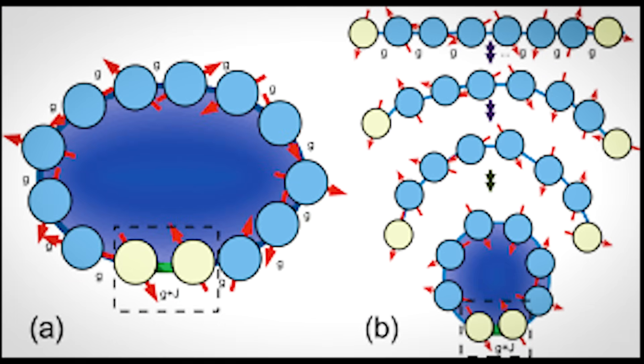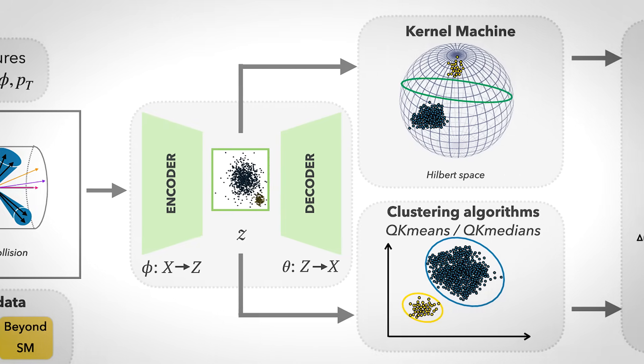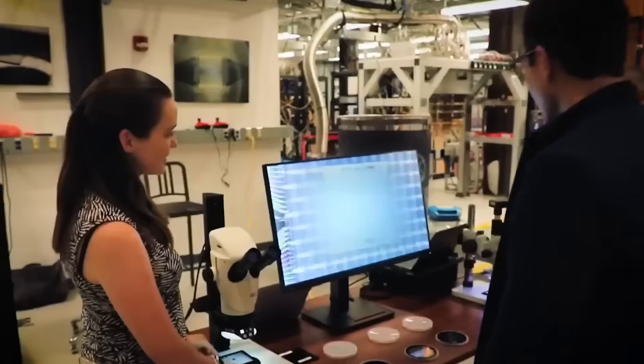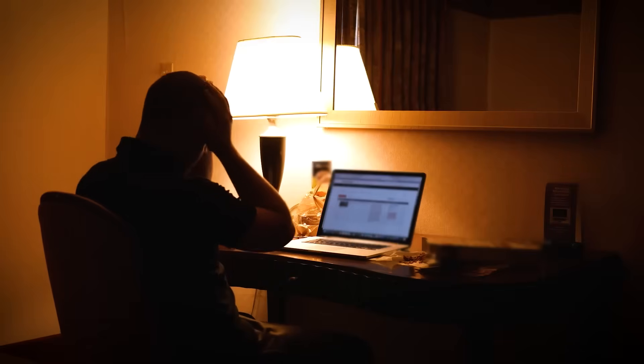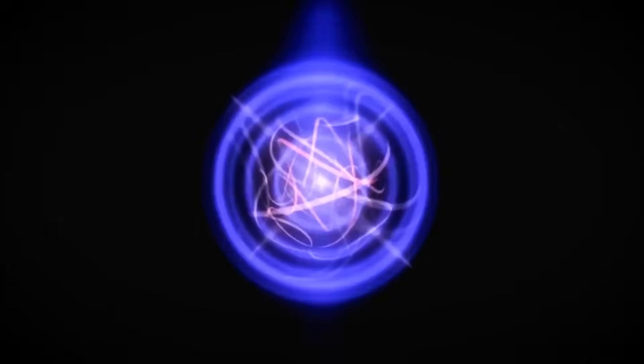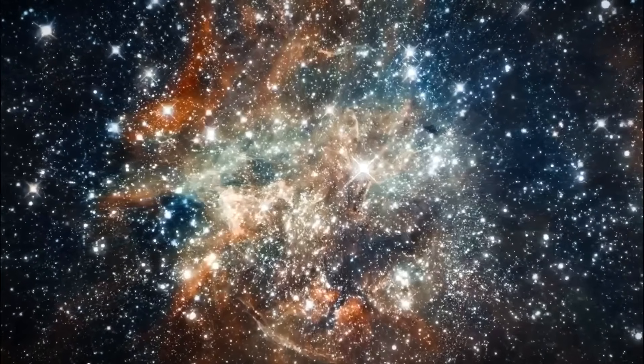Instead of returning predictable results, the quantum system produced data that defied all known models. The calculations seem to have been influenced by an external force, one that wasn't accounted for in any of the algorithms. At first, scientists suspected an error, a hardware malfunction, or even interference from background radiation. But further analysis revealed something far more unsettling.